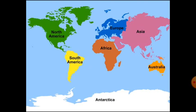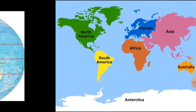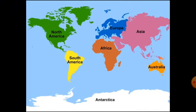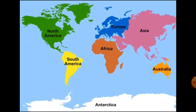These continents are Asia, Europe, Africa, North America, South America, Australia, and Antarctica. Look at the map of the world and notice that the greater part of the land mass lies in the northern hemisphere. Now we will talk about individual continents.